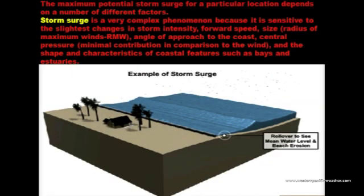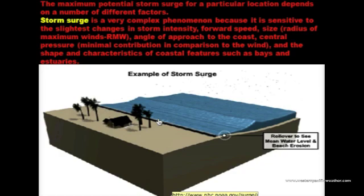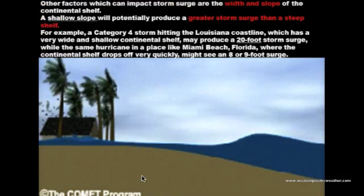The maximum potential storm surge depends on several factors — pressure, wind, and your coastal area. Storm surge is very complex. In parts of the western Pacific, it's less severe because coastal plains are relatively steep with a sharp gradient and coral reefs. But in most Atlantic locations, especially the Gulf Coast, there is a very shallow coastal area and a gentle slope — as seen with Biloxi, Mississippi during Hurricane Katrina — allowing the surge to push farther inland and be much stronger.